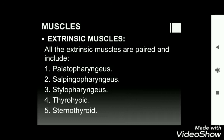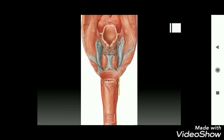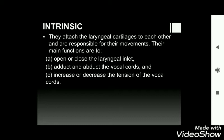The extrinsic muscles are all paired and include palatopharyngeus, salpingopharyngeus, stylopharyngeus, tyrohyoid, and sternothyroid. Sternothyroid and tyrohyoid attach to the oblique line of the thyroid laminae, while stylopharyngeus extends from the styloid process to the pharynx. Salpingopharyngeus is located in the vertical fold of the nasopharynx, and palatopharyngeus extends from the palate.